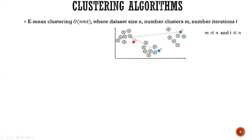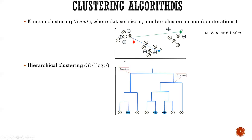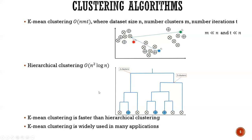There are two popular clustering algorithms. The first is K-Means clustering, and the second popular one is hierarchical clustering, which has complexity O(n² log n) where n is the dataset size. K-Means is much faster than hierarchical clustering and is widely used in many applications, so in this work we focus on K-Means clustering.